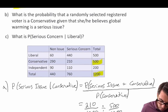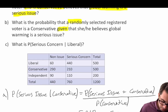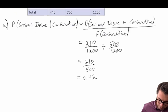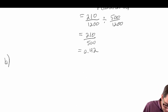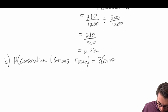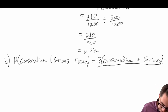Question B: what is the probability that a randomly selected registered voter is conservative, given that she or he believes global warming is a serious issue? So we're given that they believe global warming is a serious issue, and we're interested in the probability that they are conservative. We write this as P(conservative | serious issue) = P(conservative and serious) / P(serious issue).